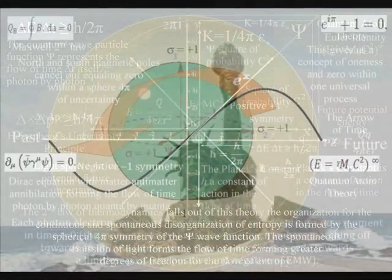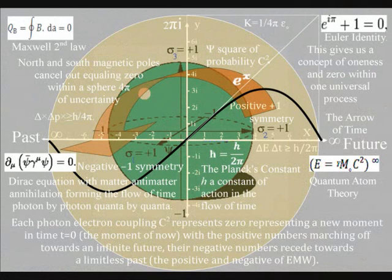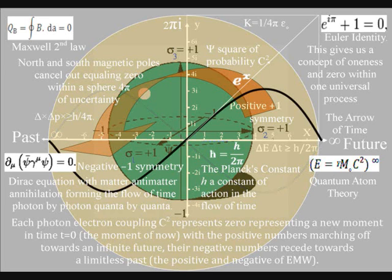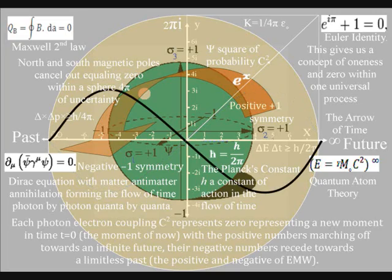In the top right-hand corner of this diagram, we have Euler's identity, the most beautiful equation to come out of the mind of man. But this beautiful equation has no meaning or purpose in modern physics.